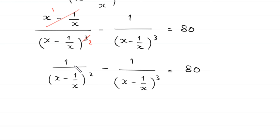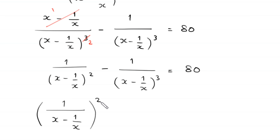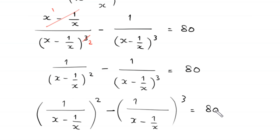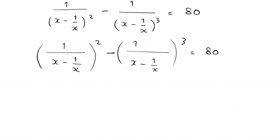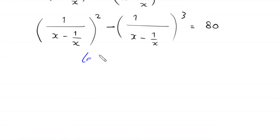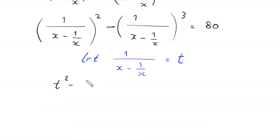This expression can be written as 1/(x - 1/x)² minus 1/(x - 1/x)³ equal to 80. Now we let t = x - 1/x as our substitution.